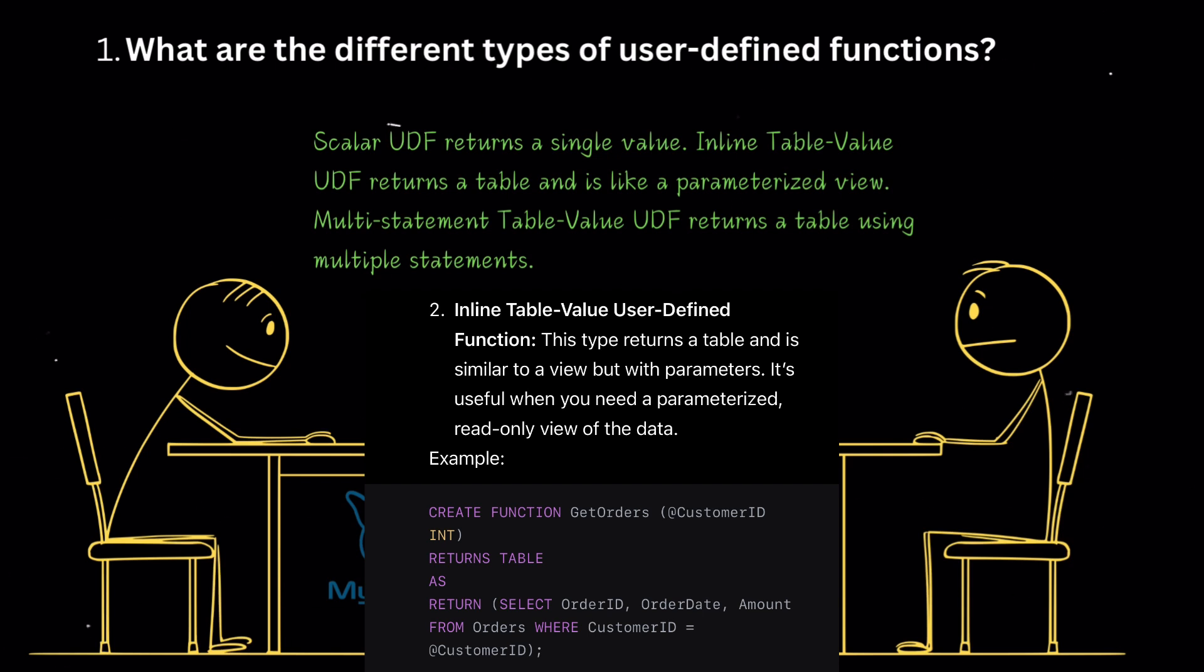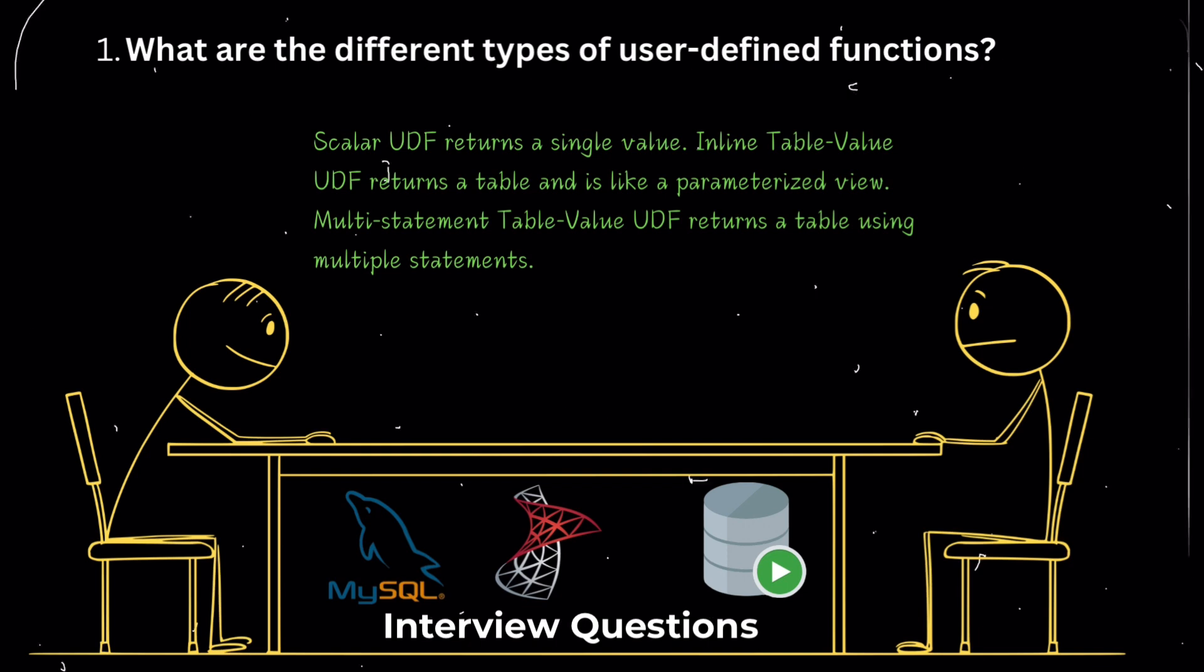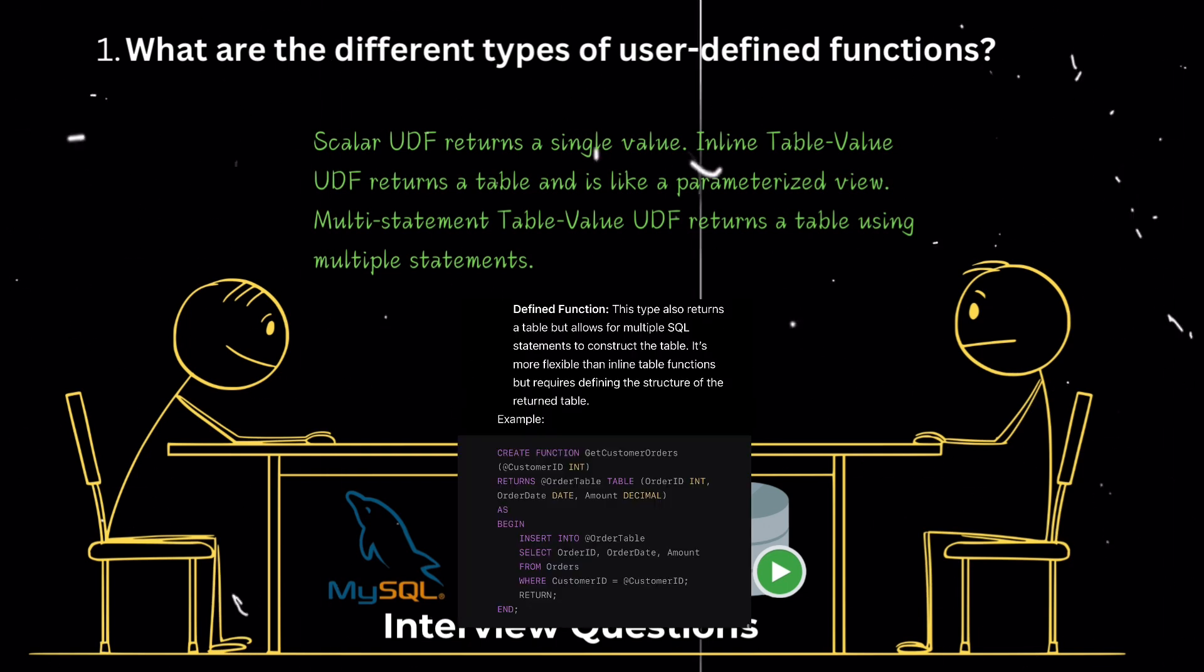What are the different types of user-defined functions? There are several types of user-defined functions in SQL, each serving a different purpose. Scalar user-defined function. This type returns a single scalar value, such as an integer or a string. These functions can accept zero or more parameters and return a single value. For instance, you might create a function to calculate the age based on a birth date.